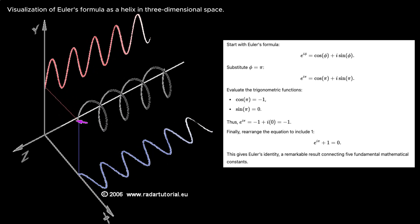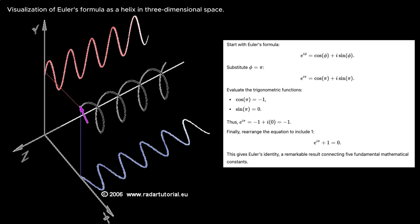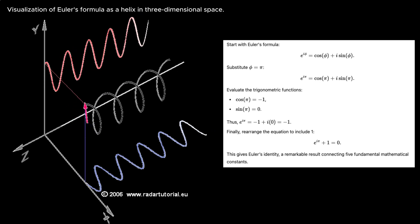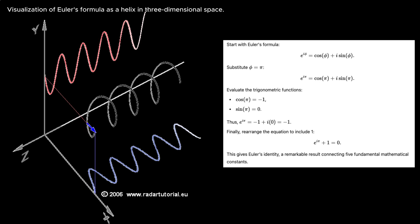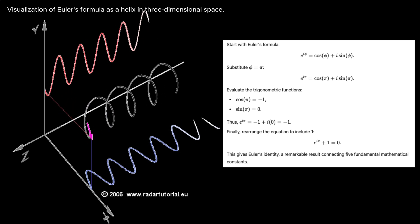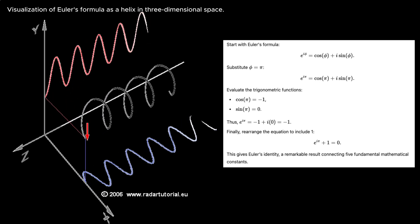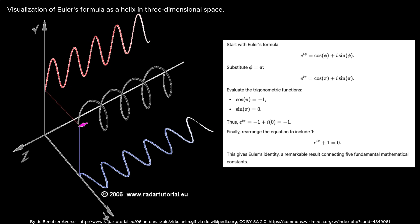Euler's equation is a stunning example of mathematical beauty, uniting the exponential, trigonometric, and complex numbers into one equation.